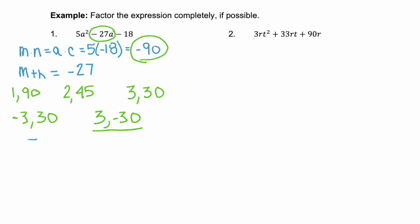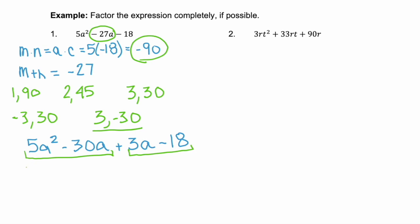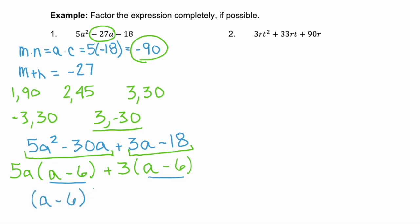That gives us 5A squared minus 30A plus 3A minus 18. Use the associative property and group the first two terms and the last two terms. Factor out the GCF of the first two terms, 5A, and we get the binomial (a minus 6). The GCF of the second two terms is 3, giving the binomial (a minus 6). They both share this binomial, so factor out (a minus 6) and we're left with (5A plus 3).